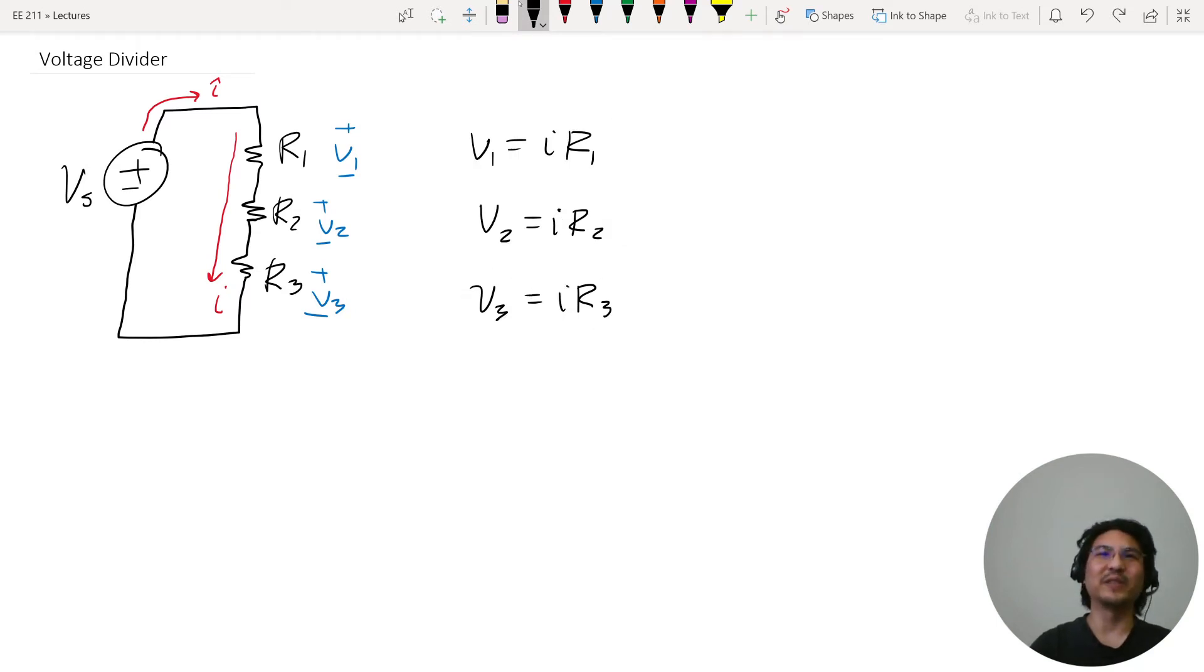And then the result is we're dividing this into smaller chunks. If you go KVL, and let's say we go around this way, then going this way that's negative Vs plus, and then if we're going this way, that's positive, positive, positive, equals zero. And if you move this to the other side, Vs equals V1 plus V2 plus V3, so we basically split up that source voltage into smaller chunks.